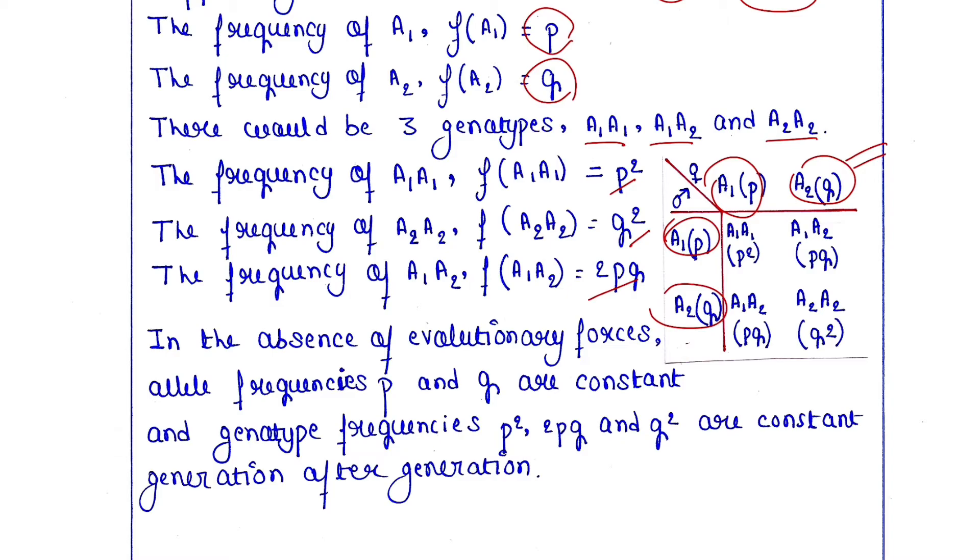They will form four offspring or four genotypes. First one is P², then PQ, one more PQ, and Q². That's why there are 2PQ.